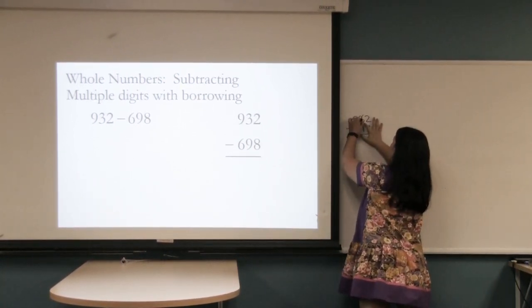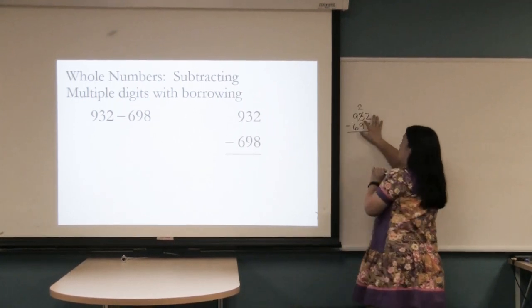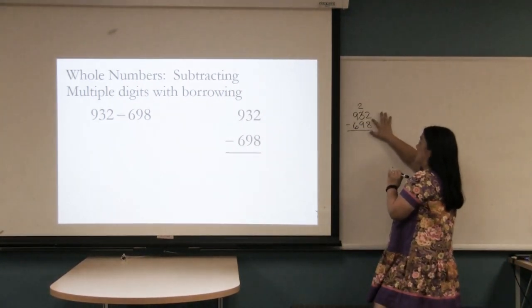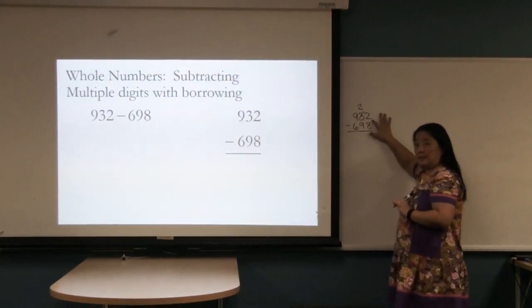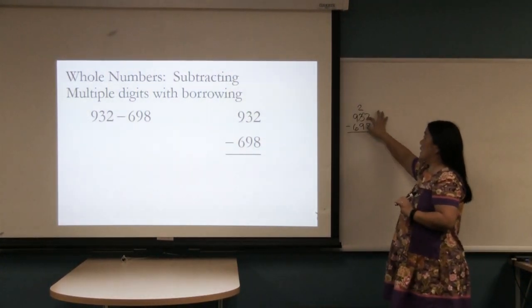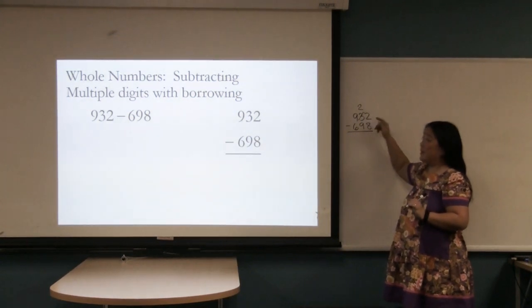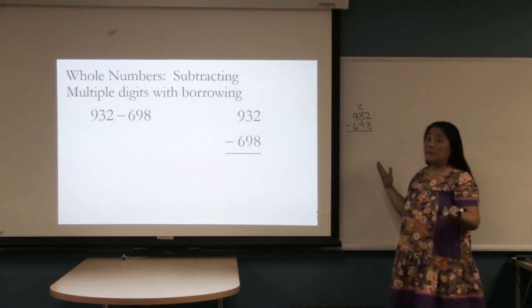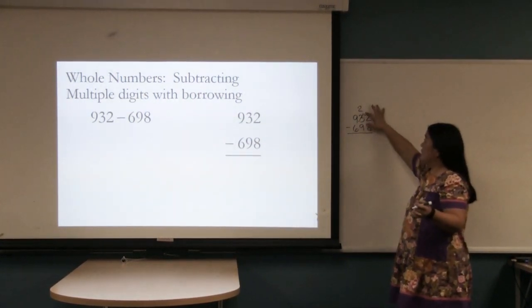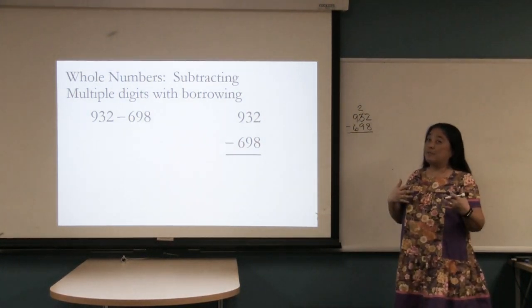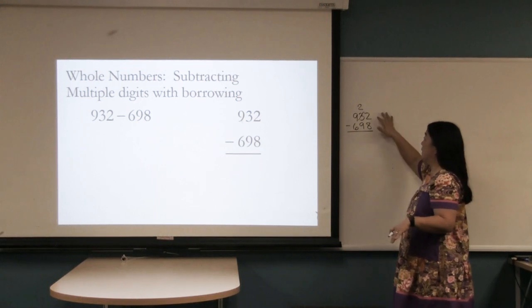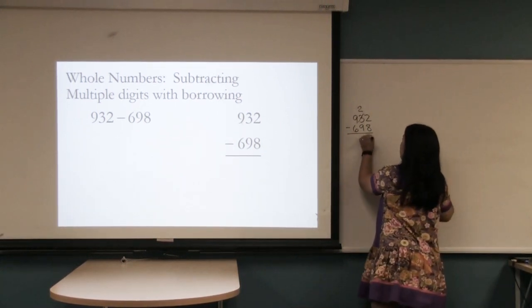We're going to take one from the tens column, leaving two tens there, and adding ten to two, which makes that into twelve. Some students will cross this out and write a small twelve above here. I'm just going to put a little one there, so it says twelve. Twelve minus eight. We can do twelve minus eight. I don't have twelve fingers, but we can do twelve minus eight, and we'll get four.